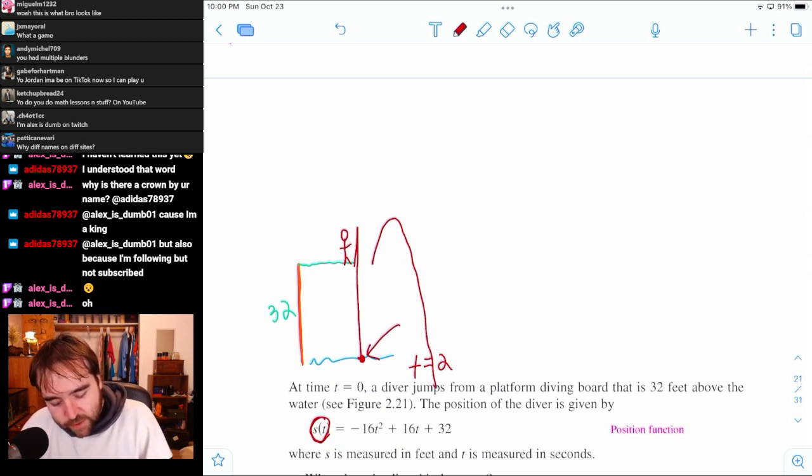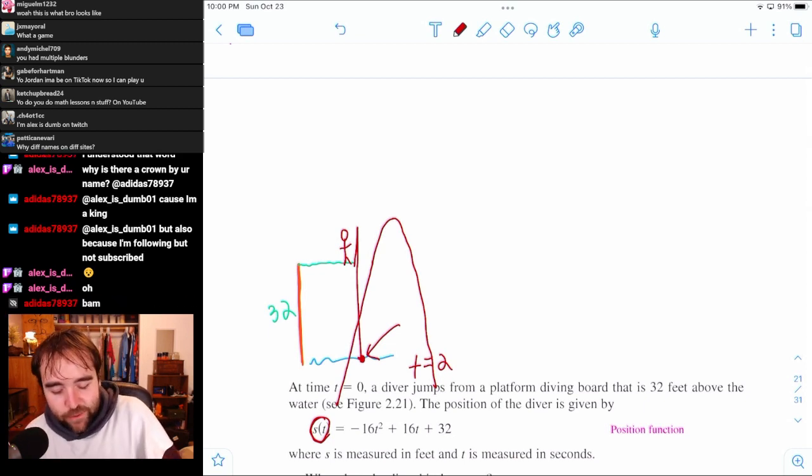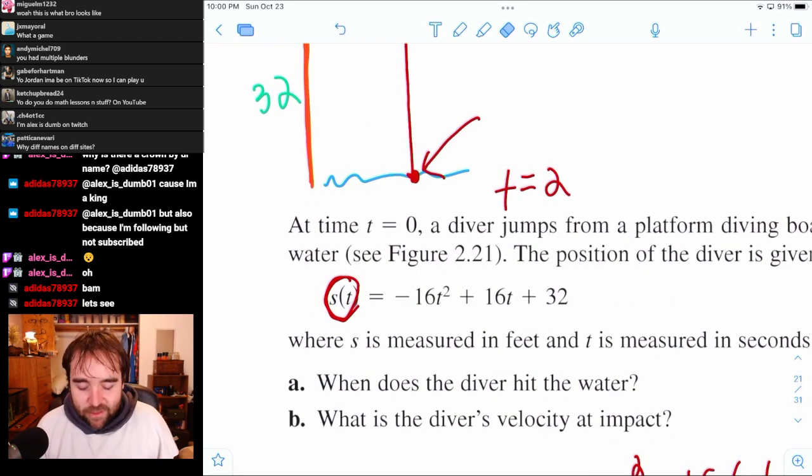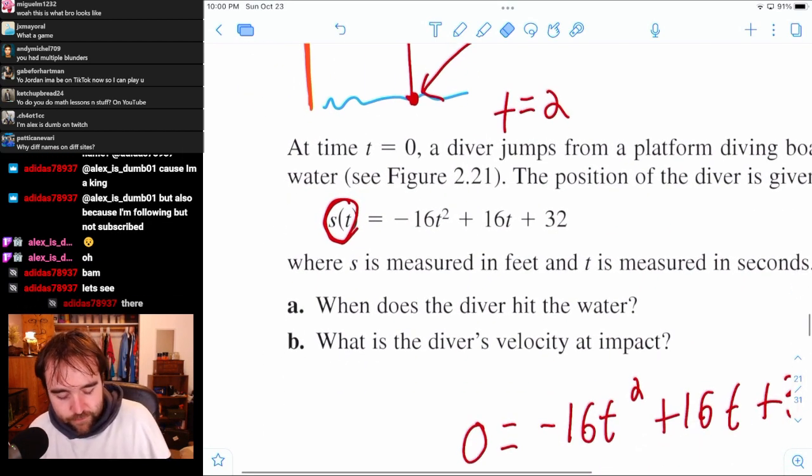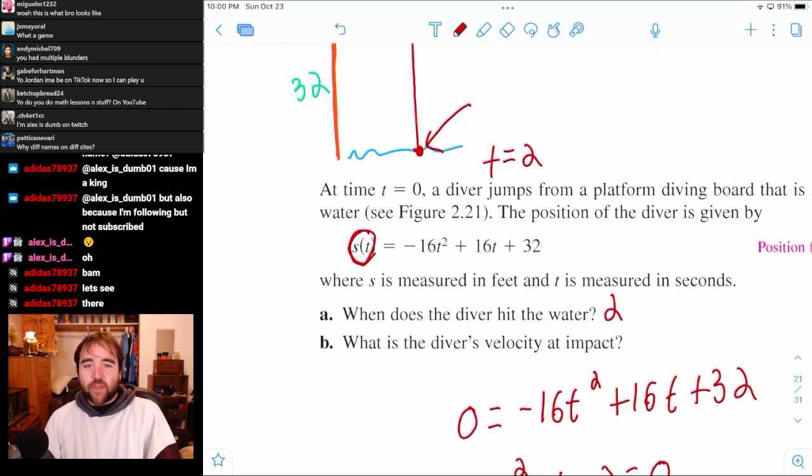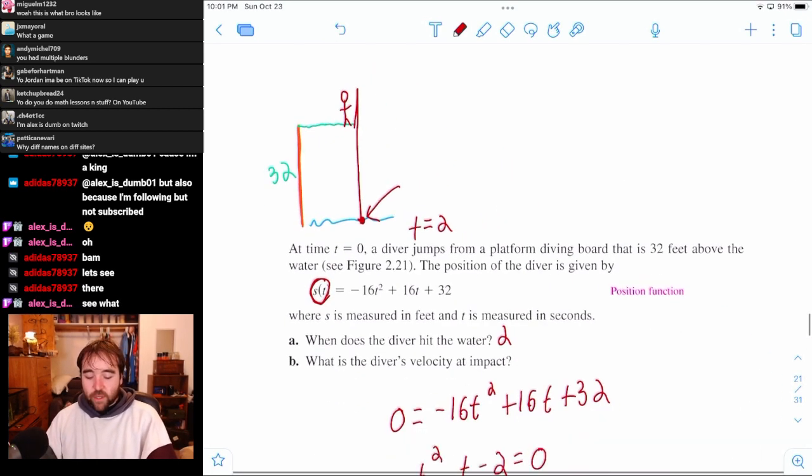So if we tried to go back in time and picture him, like, falling towards the water, that's where he would hit. That's what that negative 1 is. But, of course, we don't actually care about that, because that's not real. He's only going to hit the water at time equals 2. That's the algebra 2 problem. I've given that to algebra 2 students plenty of times.